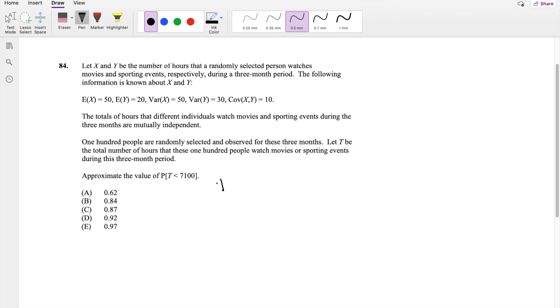So we know that T is the total amount of X plus Y, where X is the sports or something like that, and Y is movies or something like that. And also, we have to make sure we multiply by 100, because it's of 100 people.